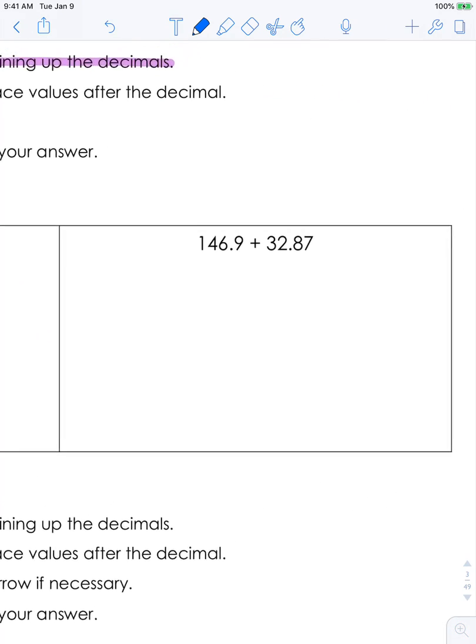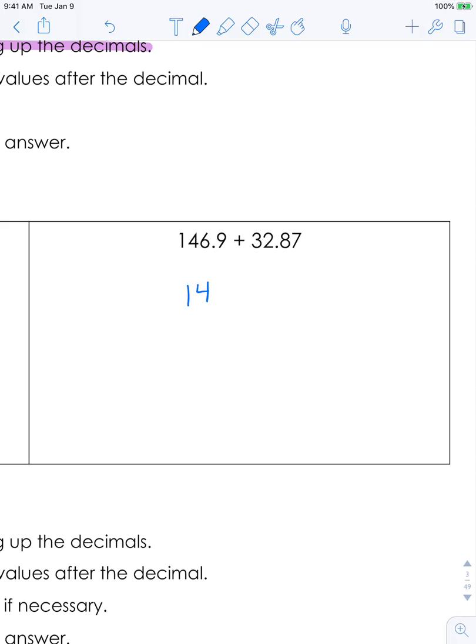So let's do that again. 146.9 plus 32.87. Once again we are missing a digit here so we will add a zero, and I'm going to highlight right now straight down my decimals and drop this one down. And now we'll add straight down again and we get 179.77.